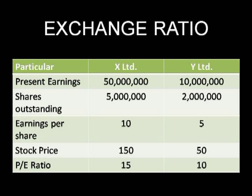At present, the earnings of X are 50 million and Y is 10 million. The shares outstanding for X is 5 million while Y is 2 million. Earnings per share is Rs. 10 for X and Rs. 5 for Y. The stock price of X is Rs. 150 and Y is Rs. 50. The P/E ratio is 15 for X and 10 for Y.